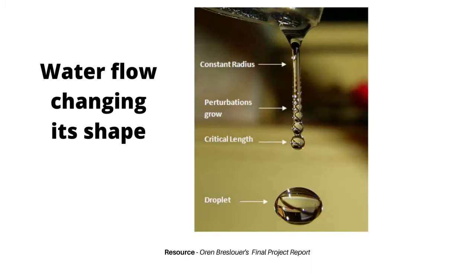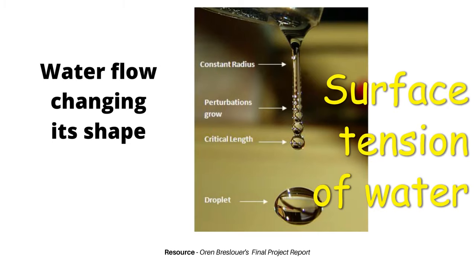So the water is trying to minimize its surface area and changing its shape from cylinder to sphere, due to which we see a wavy pattern which is called Rayleigh-Plateau instability. This phenomena is mainly happening due to the surface tension of water.